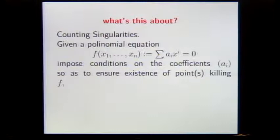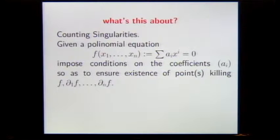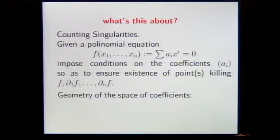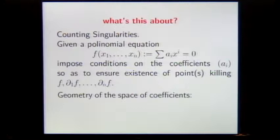So what's this about? It's counting singularities in the sense that we look at, say, hypersurfaces and impose conditions on the coefficients to ensure the existence of points which kill both f and the gradient of f. That's what a singularity of a hypersurface is. Sometimes it works, sometimes it doesn't. So we are actually interested more on the geometry of the space of the coefficients, in the sense of parameter spaces, than precisely on the hypersurfaces with the singularity we are imposing on it.